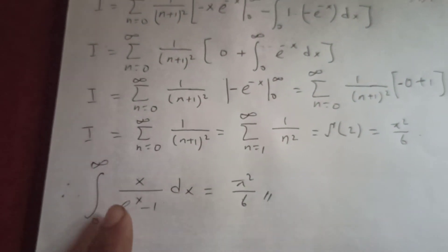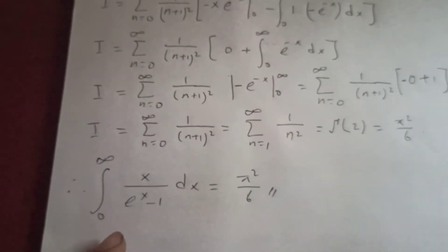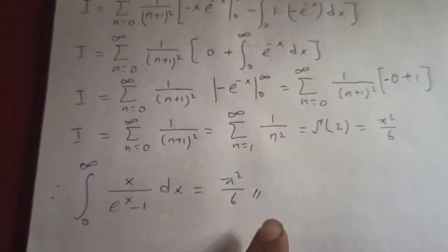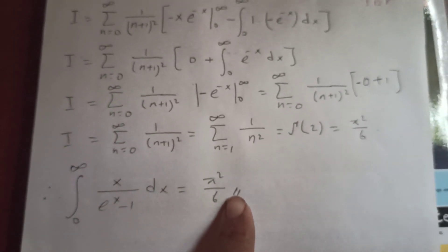So our whole integral — the integral from 0 to infinity of x over (eˣ minus 1) dx — equals π²/6.